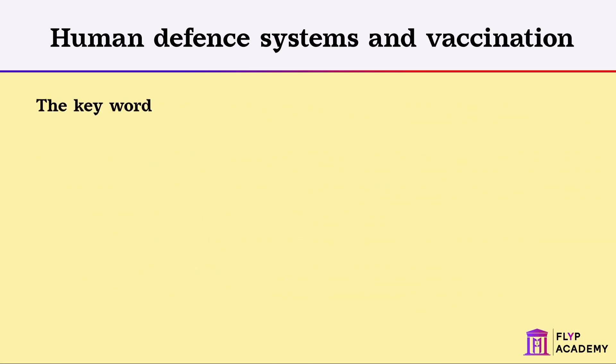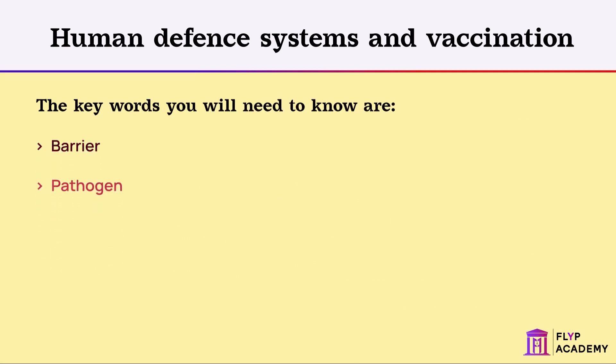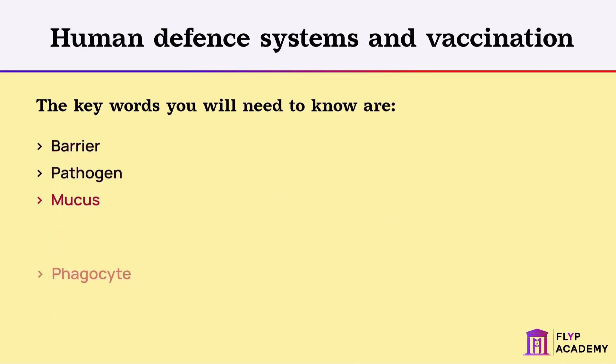The key words you'll need to know are: barrier, pathogen, mucus, phagocyte, and lymphocyte.